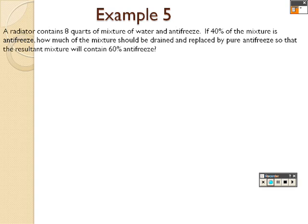A radiator contains 8 quarts of a mixture of water and antifreeze. If 40% of the mixture is antifreeze, how much of the mixture should be drained and replaced by pure antifreeze so that the resulting mixture will contain 60% antifreeze. Just like the last problem. So 60% is 0.6, looking for the result of the mixture to contain 60% antifreeze.